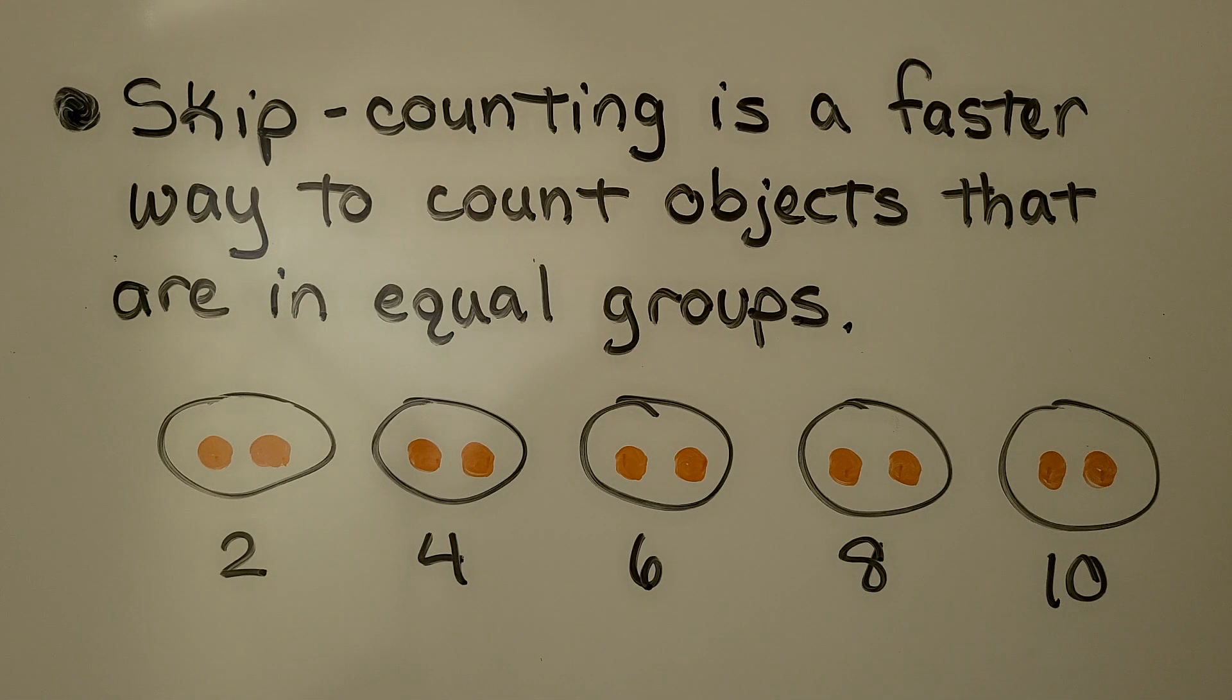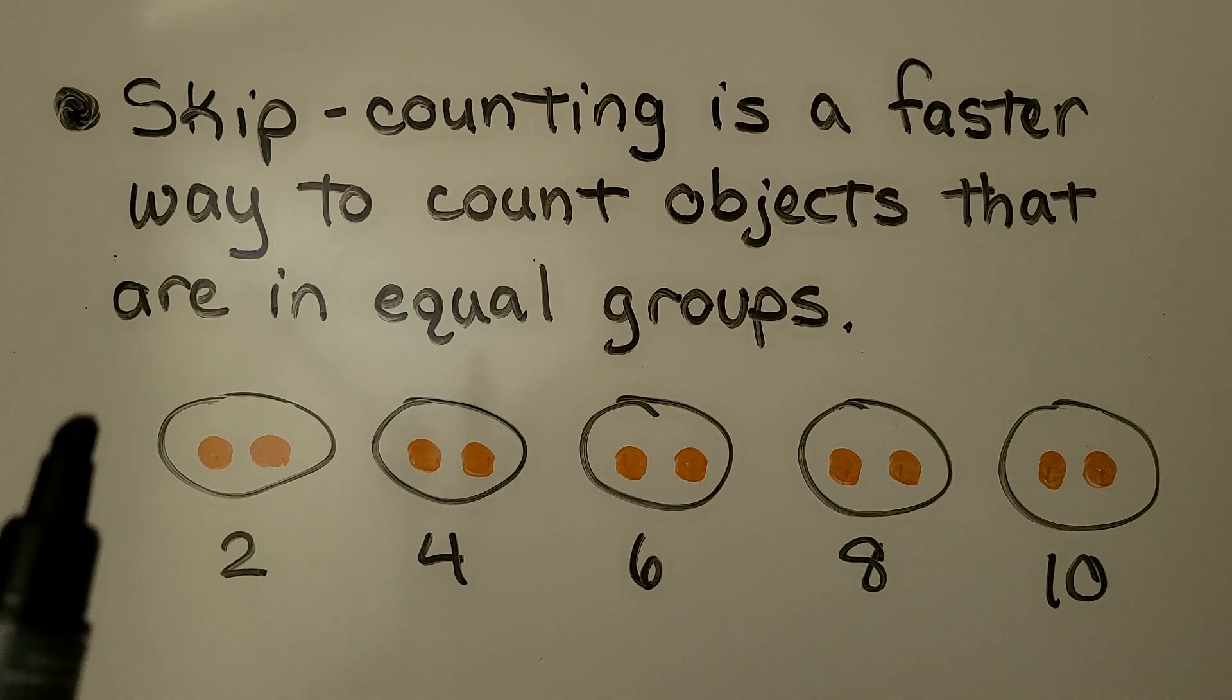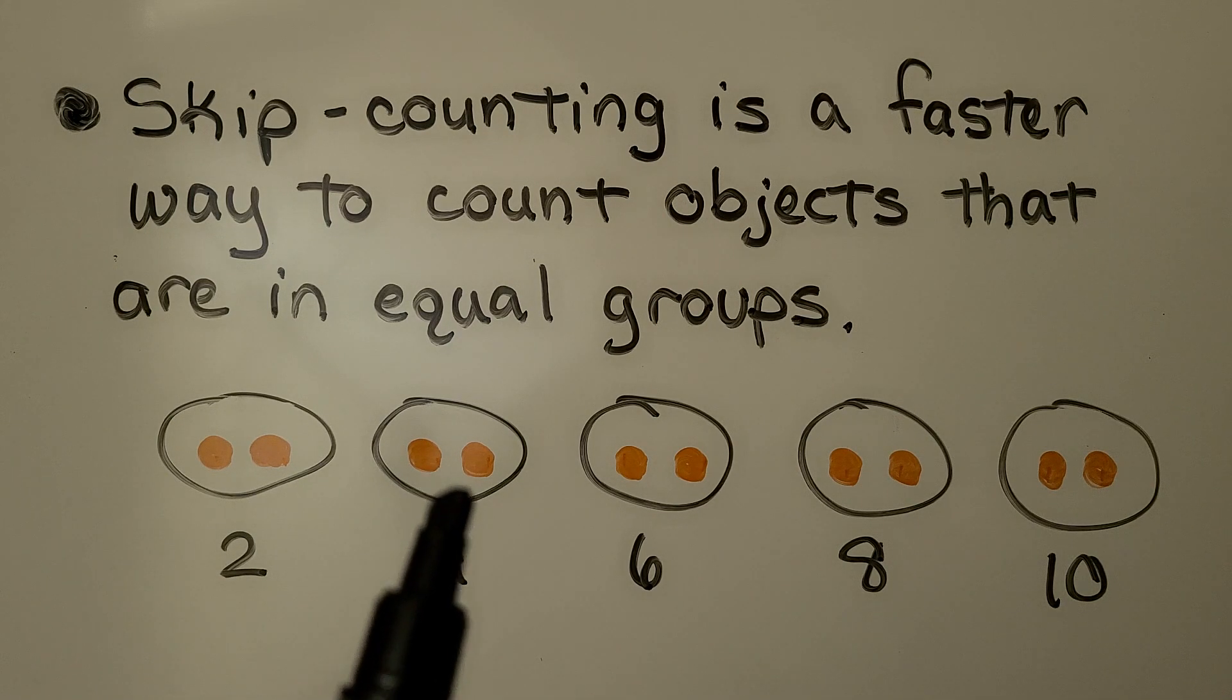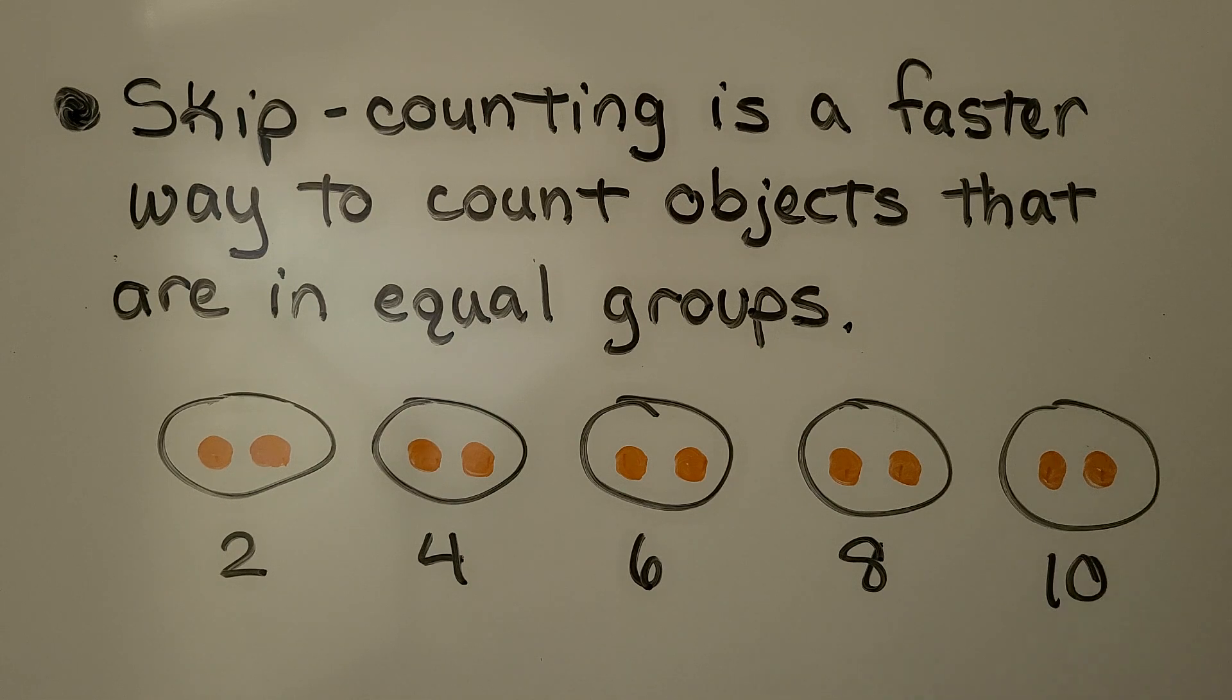As I told you in the previous video, skip counting is a faster way to count objects that are in equal groups. We just count 2, 4, 6, 8, 10. That's much quicker than saying 1, 2, 3, 4, 5, 6, 7, 8, 9, 10. It's just a faster way to count.